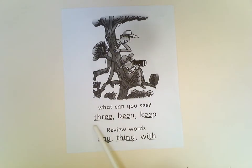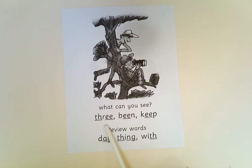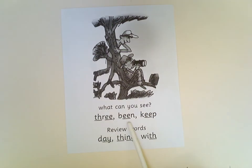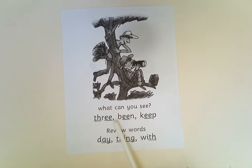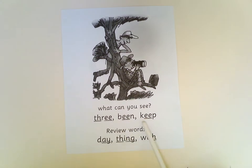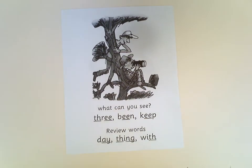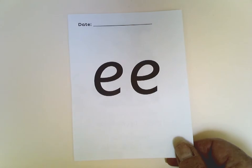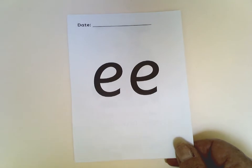EE. Three — the number three. B-EE-N, bean. Not the sort you eat, remember — bean. I have been to the park. K-EE-P, keep. Two letters, one sound EE.